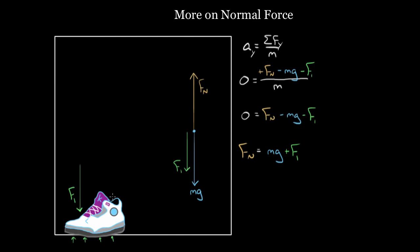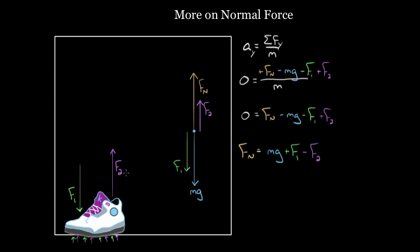If there's also an upward force F2 — say someone is pulling up on the shoe while you push down — we'd add another upward force F2 to the diagram. That adds a plus F2 to the net vertical force equation. Solving gives the normal force equals mg plus F1 minus F2. This also makes sense: if you pull up with 20 Newtons, you're relieving some pressure between the shoe and floor, reducing the normal force by 20 Newtons.